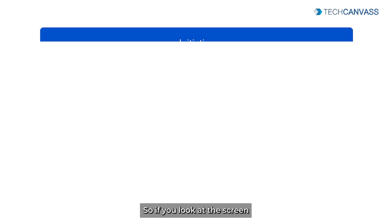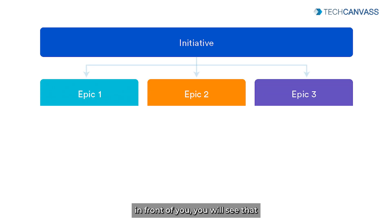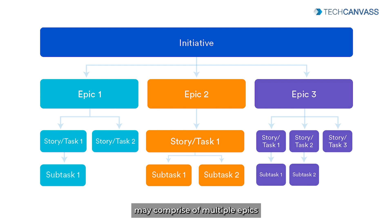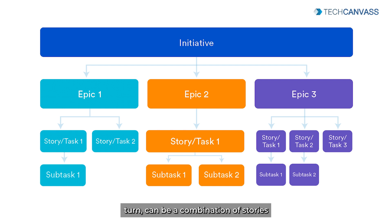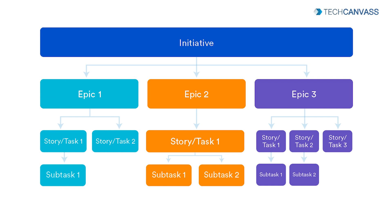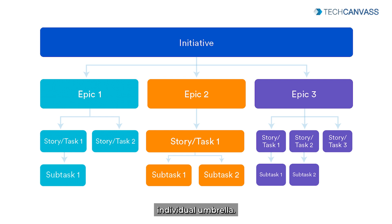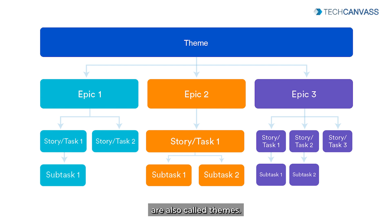As you can see on the screen, any software project or initiative may comprise multiple epics, and each epic in turn can be a combination of stories and tasks. All of these share some common objective, which is why they fall under one individual umbrella — either an epic, an initiative, or a theme.